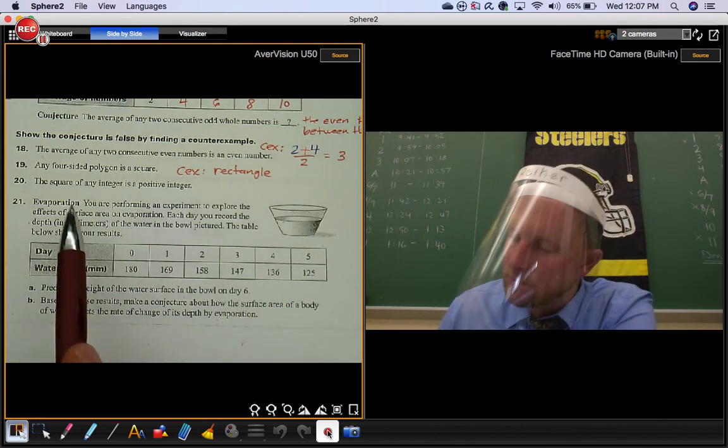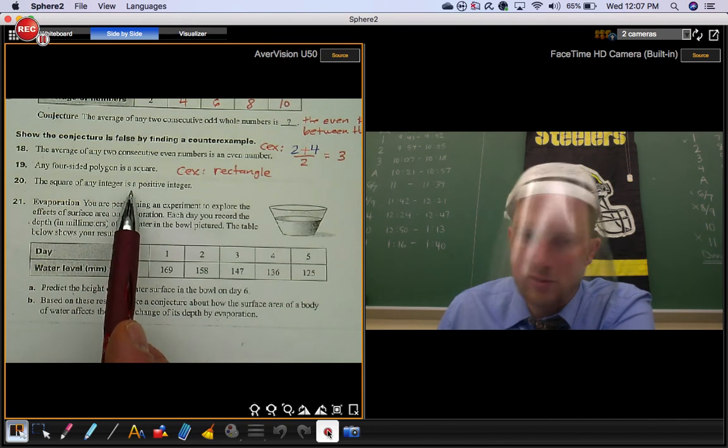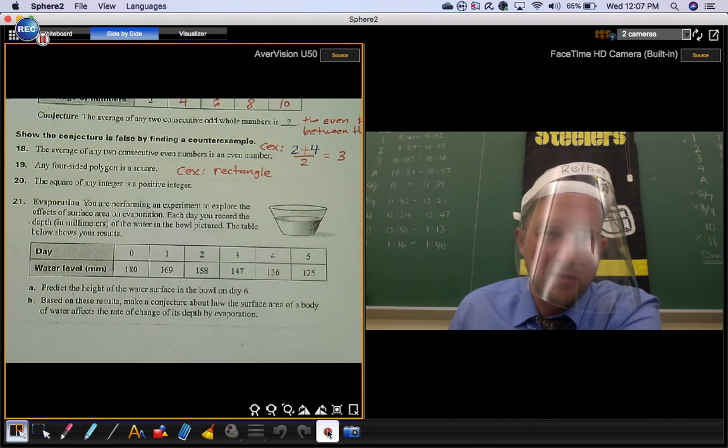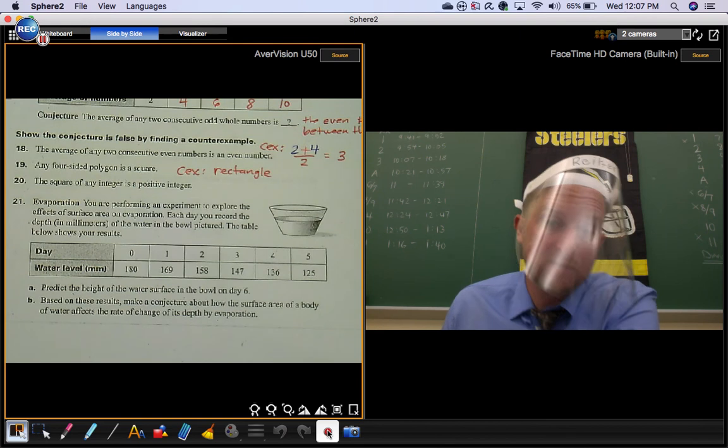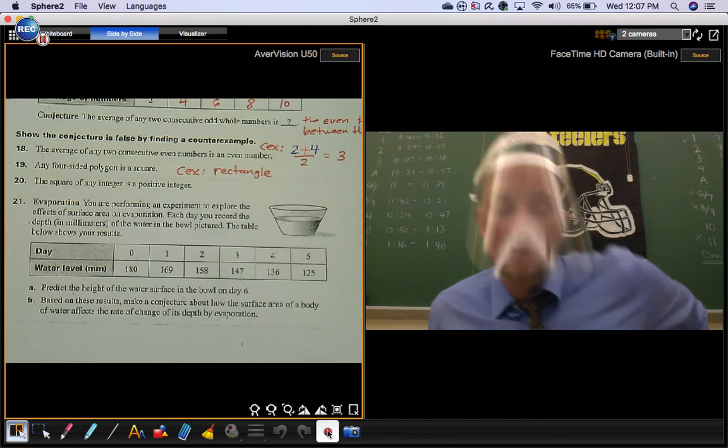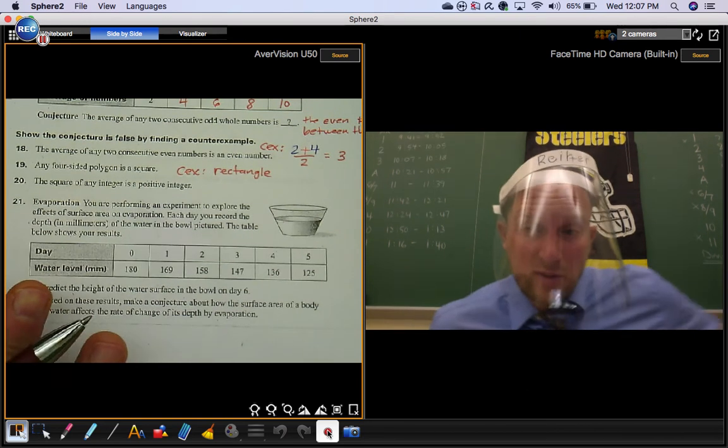Number 20. The square of any integer is a positive integer. Think about that one for a little bit, and you start squaring some integers. Now remember, integers can be positive, they can be negative, they can be zero. So all of those are on the table.